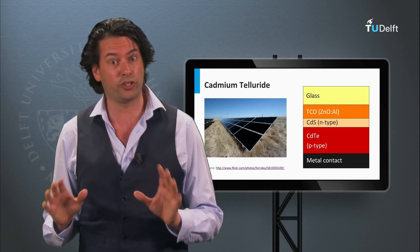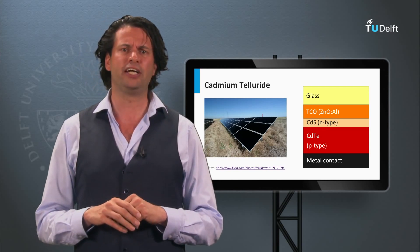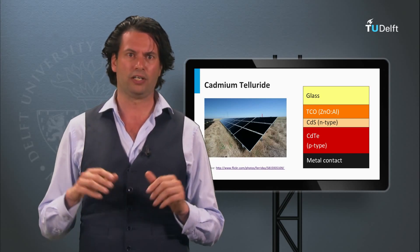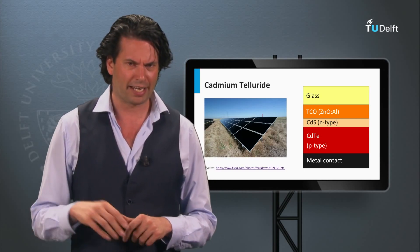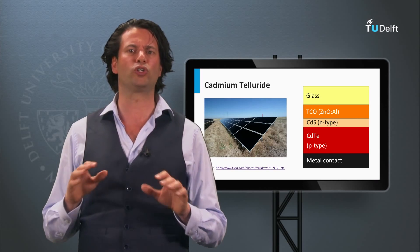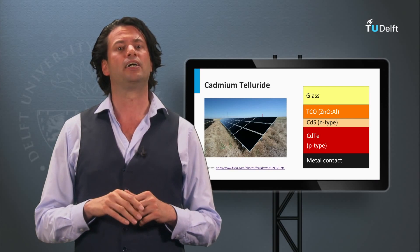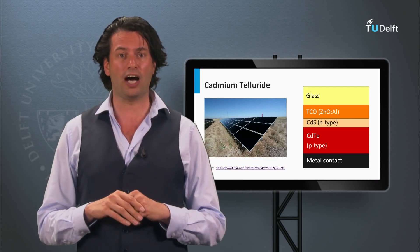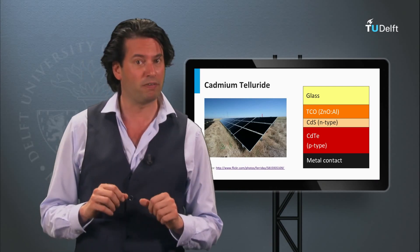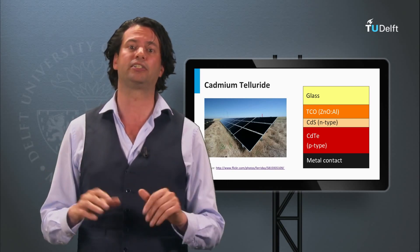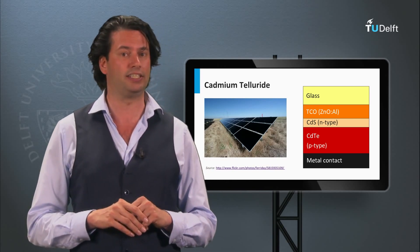An alternative thin film PV technology is based on 2-6 semiconductor, the cadmium telluride. Cadmium telluride PV technology belongs to the so-called second generation technology as well. The cadmium telluride has currently the largest market among the thin film PV technologies. In week 5 we will discuss this technology in great detail.